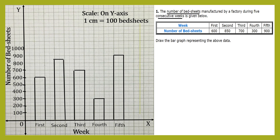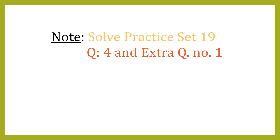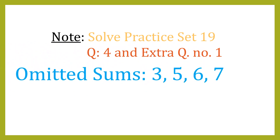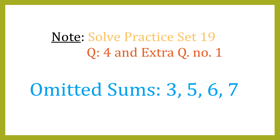As you can see, the graph is complete. The dotted arrows were just for your understanding — we don't need to draw those arrows in the actual graph. I hope you understood how to draw a bar graph and, in this sum, how to select an appropriate scale. Please note: you need to solve Practice Set 19, question number four, and the extra question number one explained in this video. Also note that sum numbers three, five, six, and seven in Practice Set 19 are omitted. Thank you.